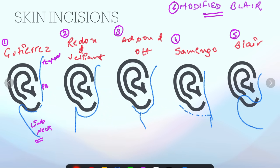Next, coming to Redon and Valiant, they gave the pre-auricular and then behind the ear, that is retro-auricular, and then moving downward. Adson and Ott incision is also known as Y incision, so it will be in the shape of Y.